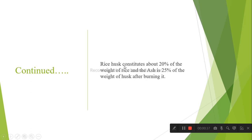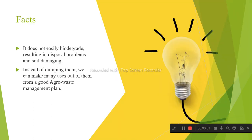Rice husk constitutes about 20% of the weight of rice, and the ash is 25% of the weight of husk after burning it. As a fact, it does not easily biodegrade, resulting in disposal problems and soil damage.